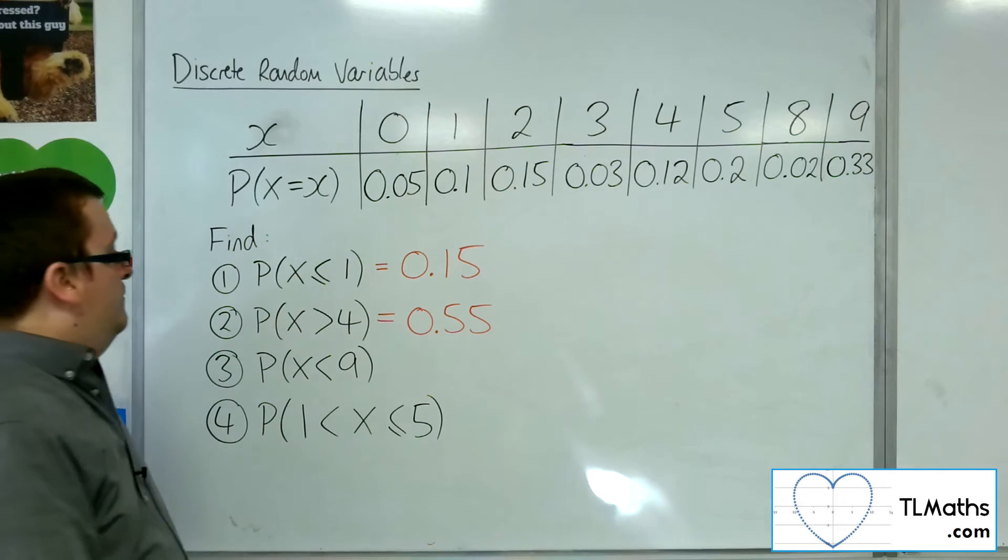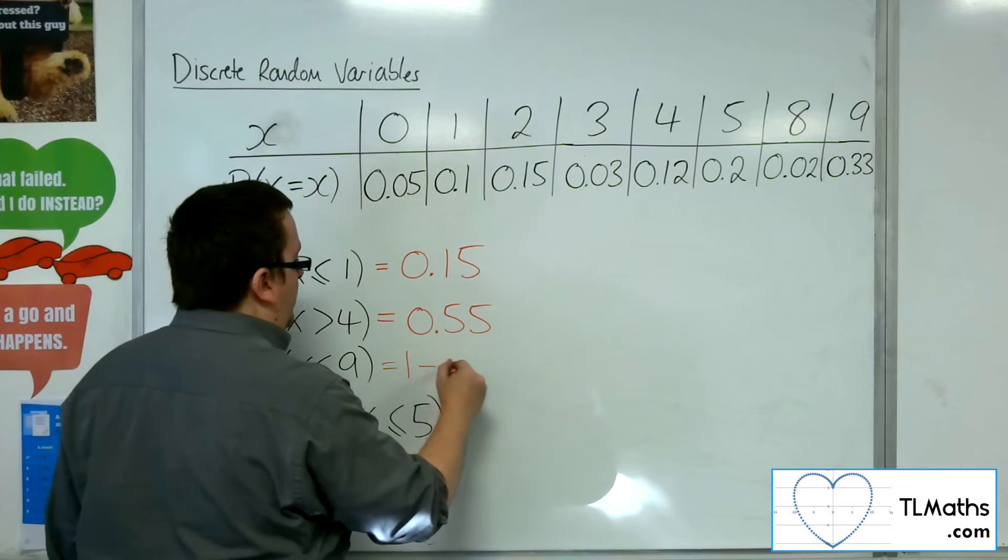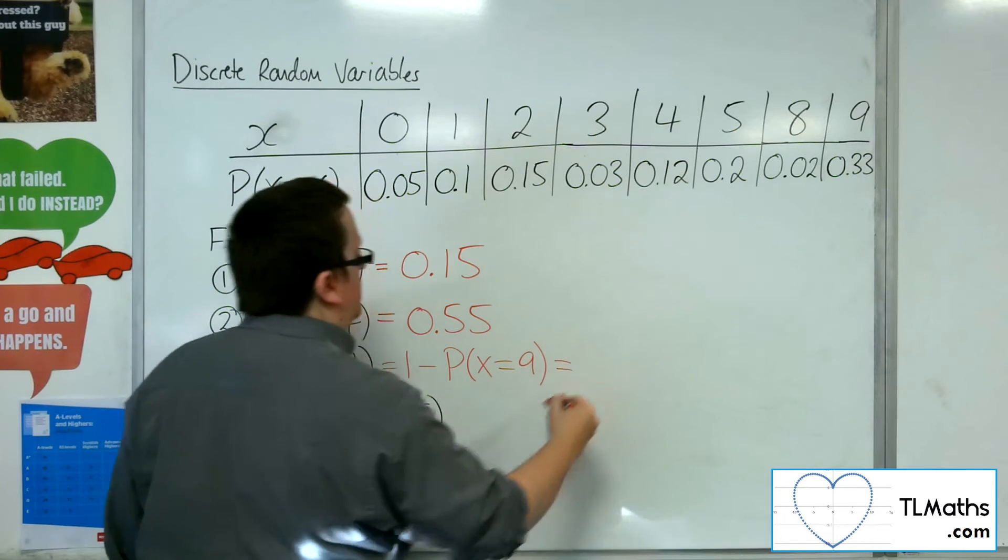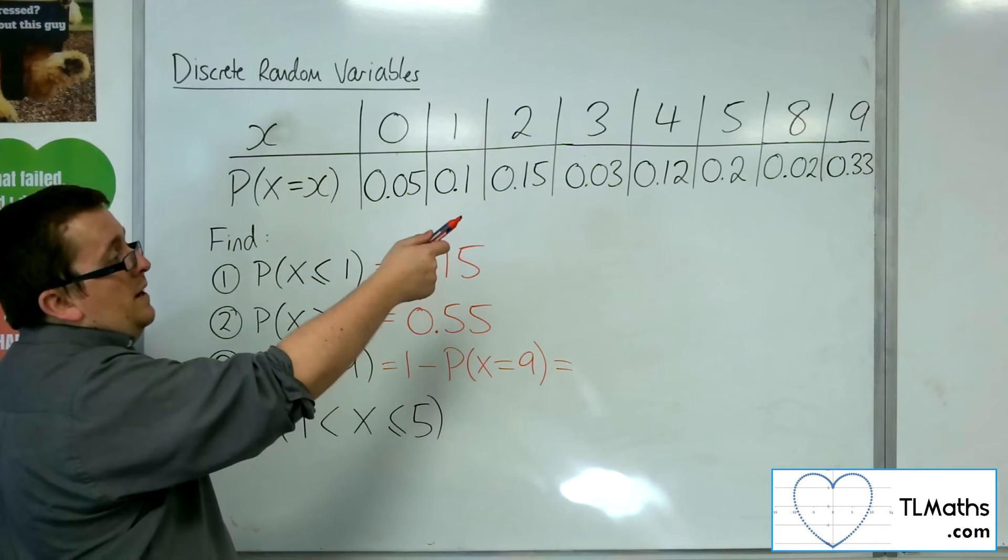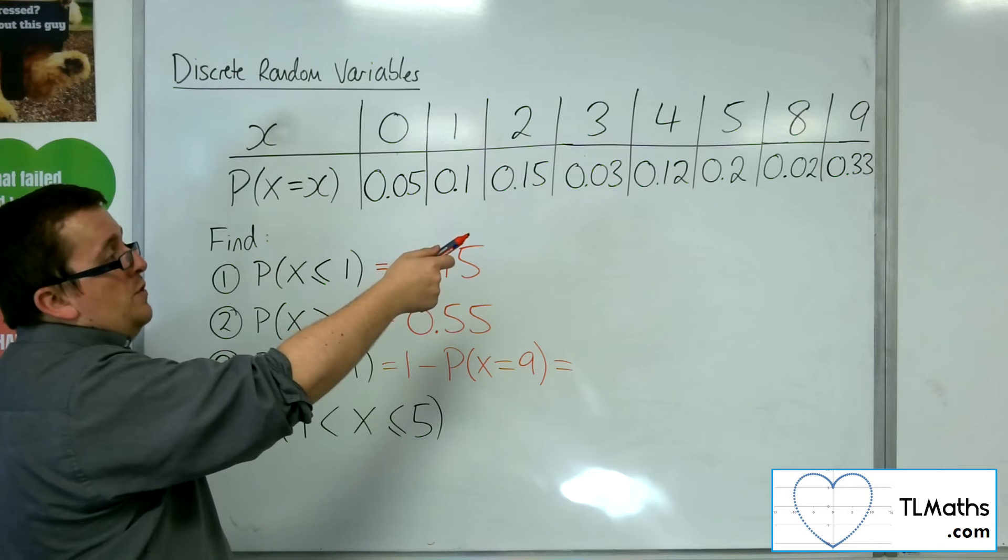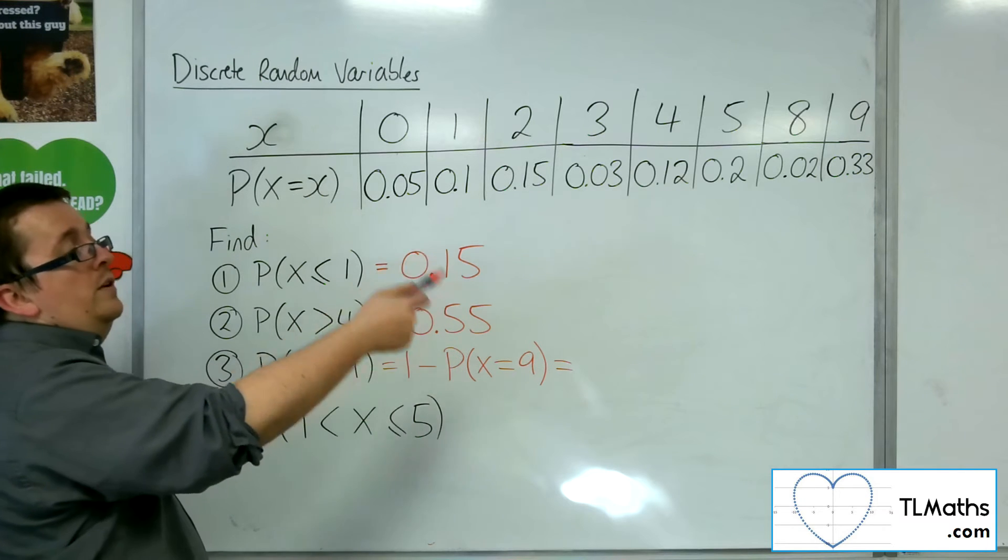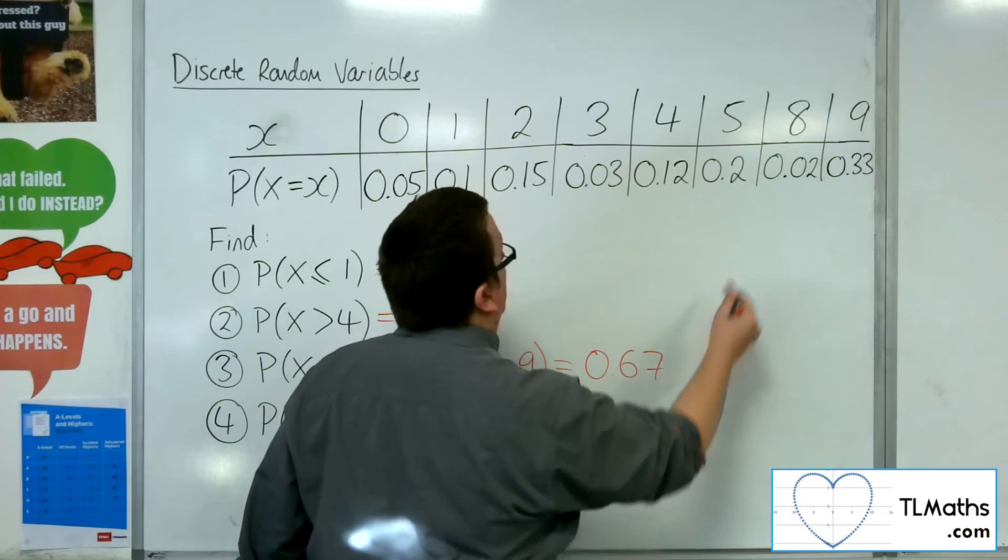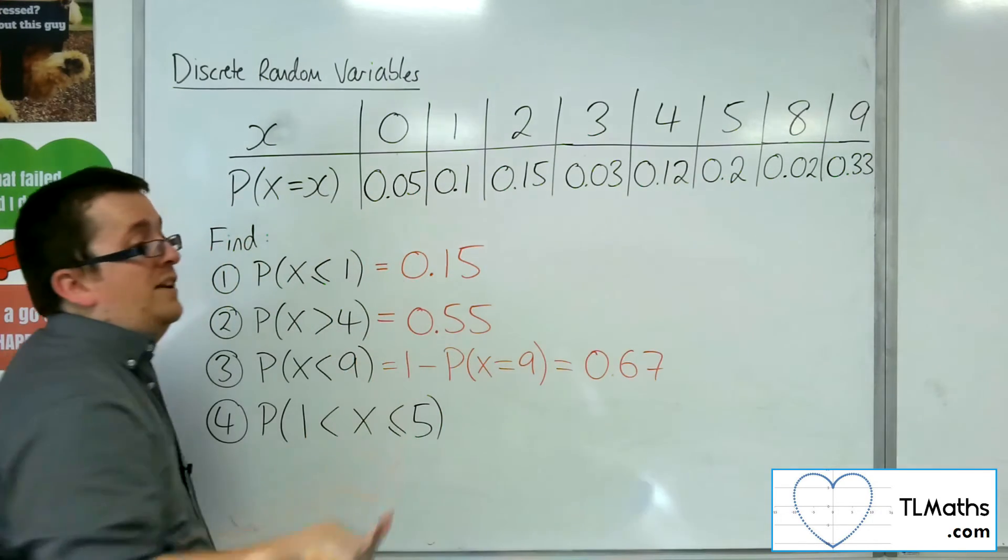So that would be the same as doing 1 take away the probability of x being 9. Okay, so that would be 1 take away the 0.33, which is equal to 0.67. Because remember, these probabilities have got to add up to 1.